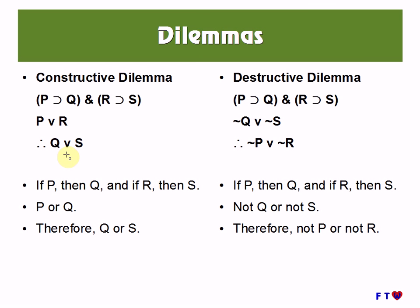With destructive dilemma, we also begin with the conjunction of two conditionals. Here we have the disjunction of their consequents — it's saying that the consequent of one of these conditionals is false. So we can conclude the disjunction of the denial of their antecedents, meaning one antecedent is false or the other one is false.